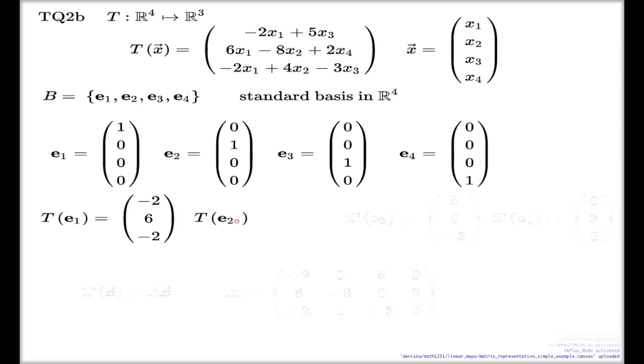When I compute T of e2, that's the components of e2. We don't have e2 here. We don't have x2 here, so it's zero in the first component. Negative 8 and 4. So zero, negative 8, and 4.